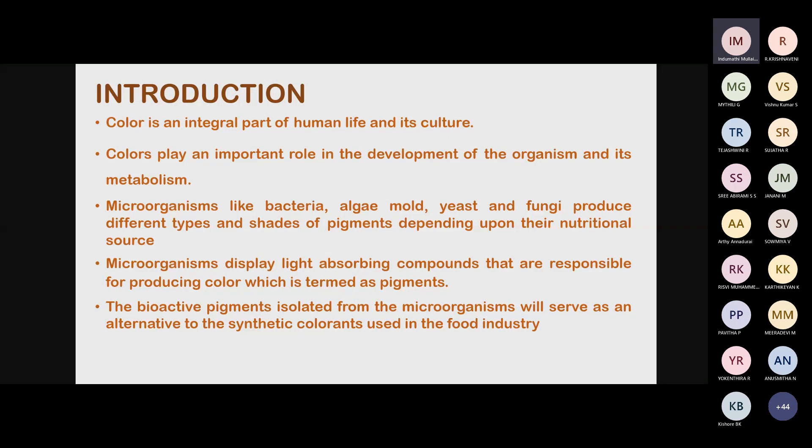Just as plants and animals have identifying colors, microorganisms like bacteria and algae also have different types of pigments. They produce these as secondary metabolites, and the pigments vary depending on the nutritional source provided — either artificially or naturally. These compounds, called nitroles and synthetics, reflect colors as light-absorbing compounds. They absorb nutrition and give out these pigments as their output. That is why they are called secondary metabolites.